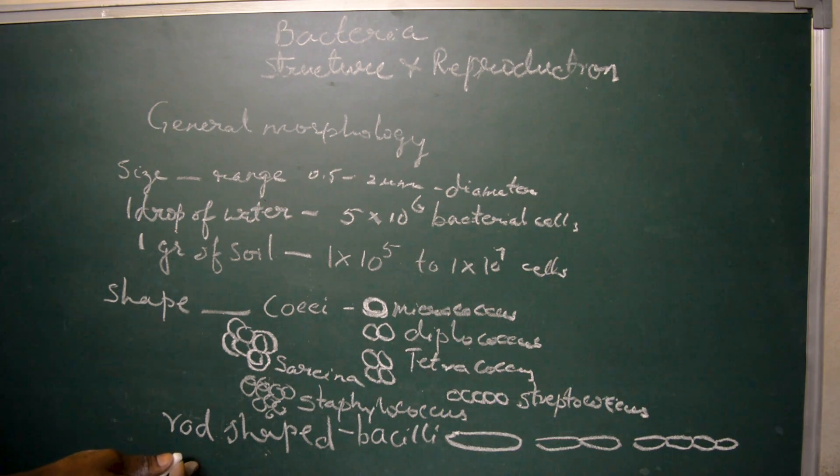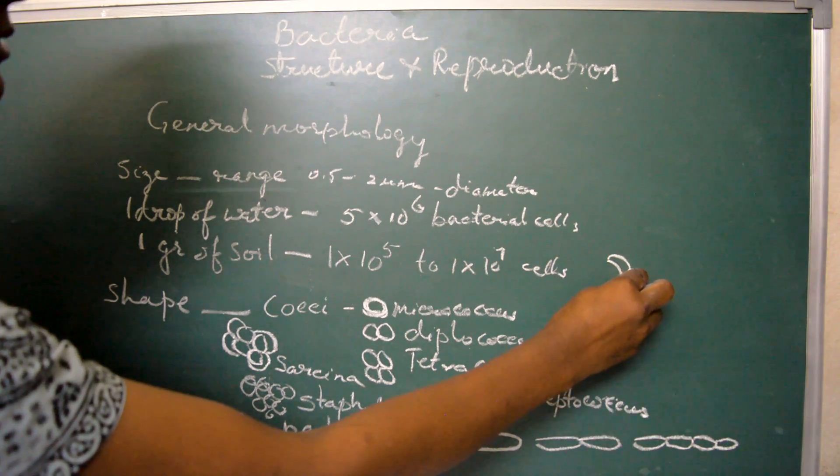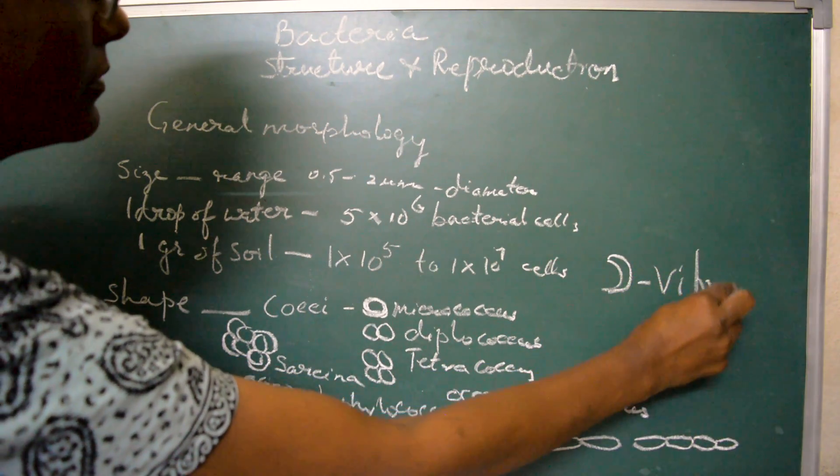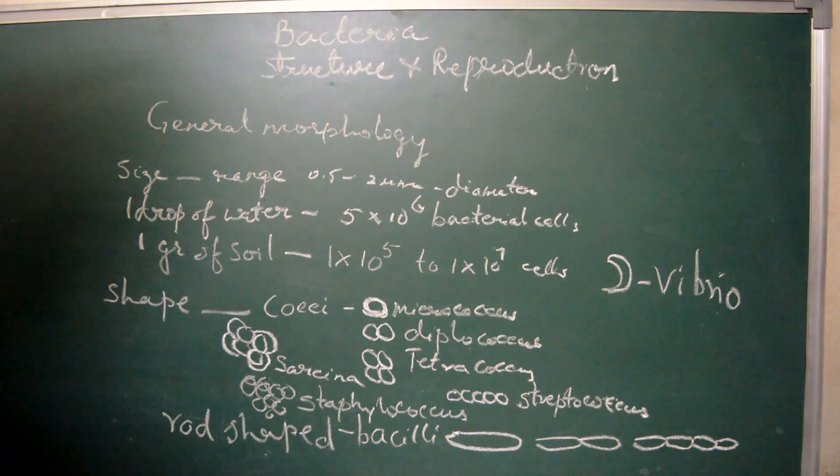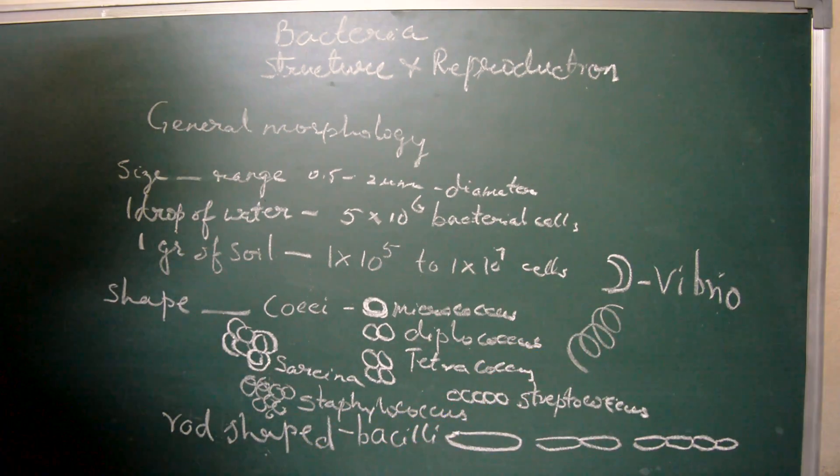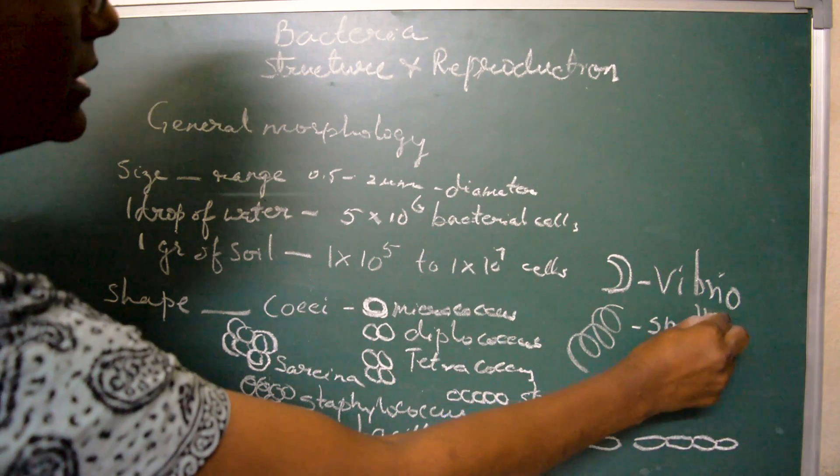There are certain bacterial cells which have comma-shaped structure, these are called the vibrio. Some of them appear helically coiled, they are spirillum type of bacteria.